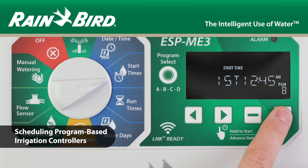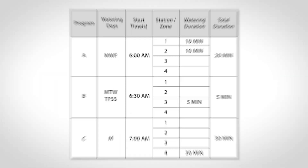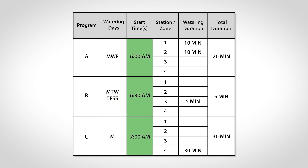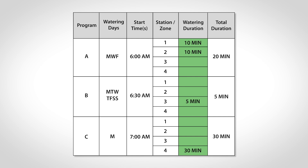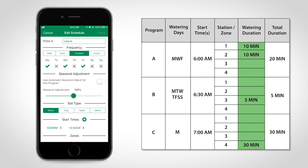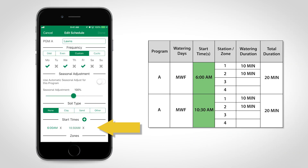Some irrigation controllers are scheduled using programs. A basic program includes instructions such as the watering days, start times, station numbers, and watering durations. Programs can also be used to schedule multiple start times.